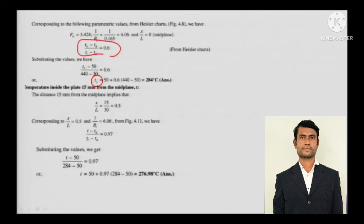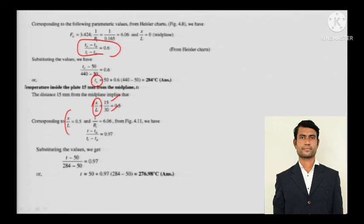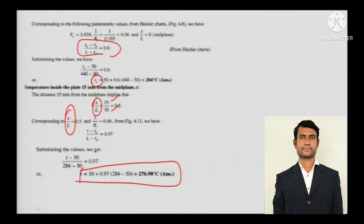For the temperature inside the plate, you now use the second chart. x by L equals 15 divided by 30 (since L is 30 mm). You have 1 by Biot number on the x-axis and the temperature profile on the y-axis. You trace the x by L value on the chart, and by simply drawing horizontal and vertical lines, you can obtain the temperature at that location inside the plate.